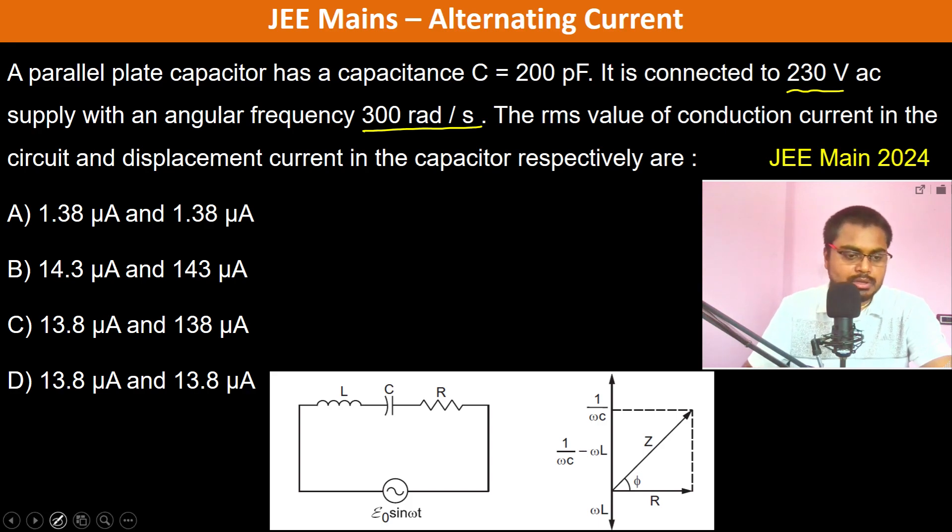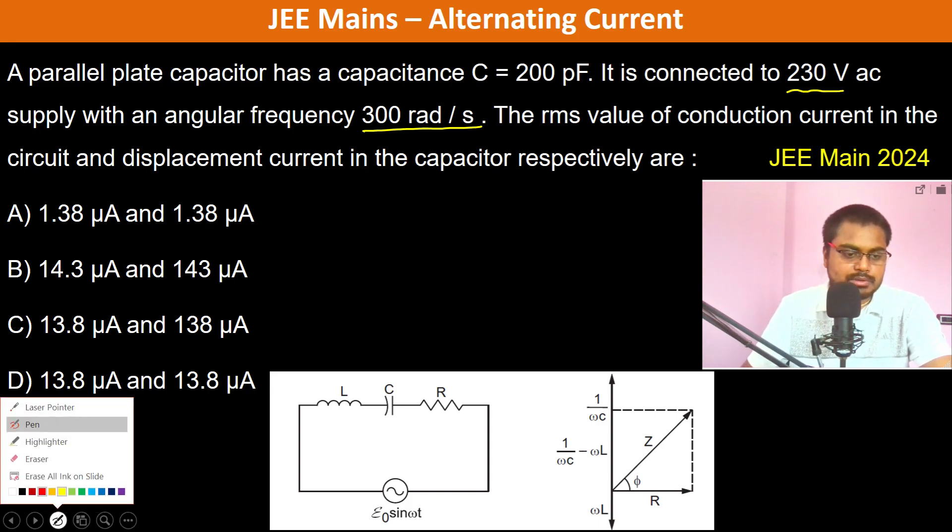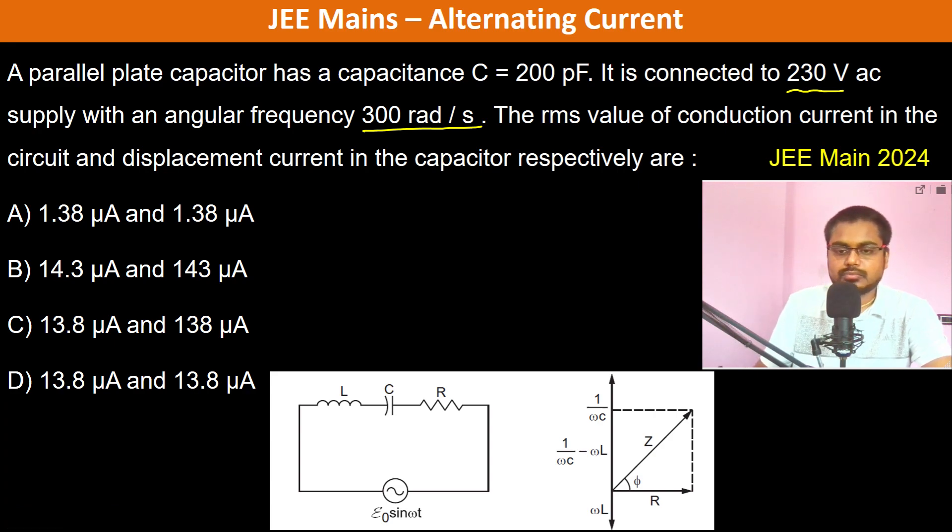Now let us go one by one. Conduction current in the circuit. This is a purely capacitive circuit, so R and ωL are not there. Therefore there is only 1/(ωC). So let us calculate 1/(ωC).